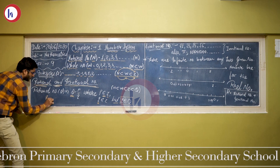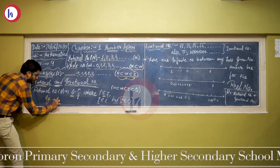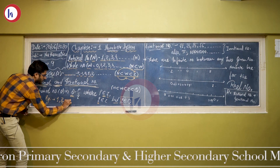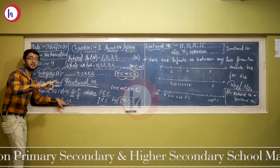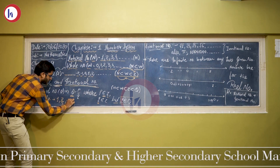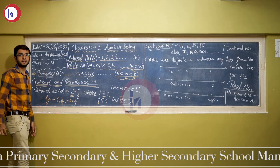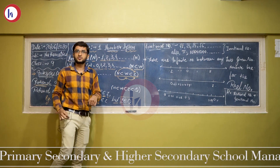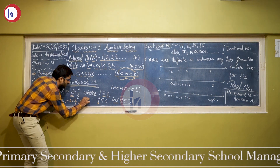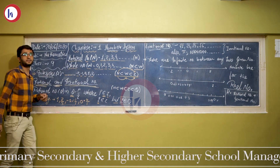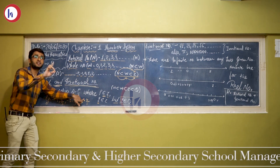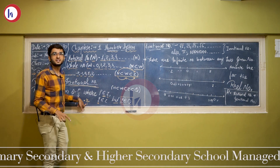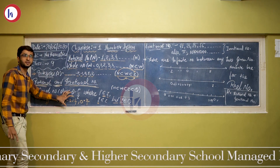Some examples of rational numbers: it can be 1, it can be 2 upon 3, it can be minus 1 — since minus 1 can be written in P upon Q form. Also, 0 is a rational number because 0 can be written as 0 upon 1. So 0 itself is a rational number, because the denominator can be 1, but the denominator cannot be 0.